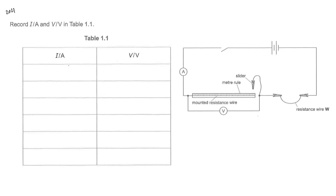Let's start with the first example, which is an electricity setup. Once it's set up, the instruction tells you that you're supposed to place the slider on the mounted resistance wire such that the current is the lowest — that means the resistance for the whole circuit should be the maximum. You are free to clip the slider on any part of the mounted wire. If you connect the slider to the extreme right-hand side, the current has to pass through all the resistance wire, giving maximum resistance and lowest current. That will be the first setting.